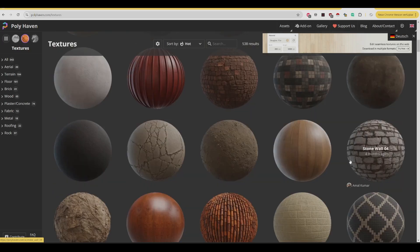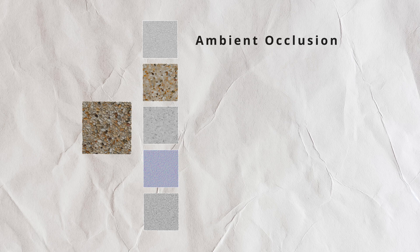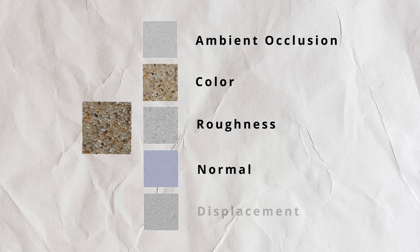So first, what are normal maps and displacement maps? These two textures are included in PBR material texture sets — the common materials you can download from platforms like Polyheaven. PBR texture sets typically consist of 5 different images, each representing a specific property of the same surface: ambient occlusion, the color map, the roughness map, the normal map, and the displacement map.